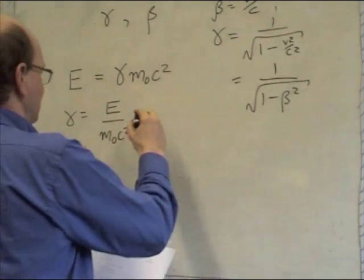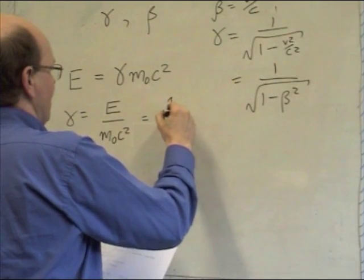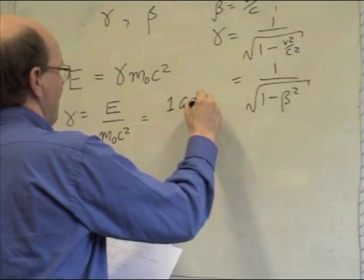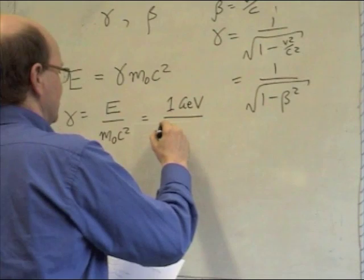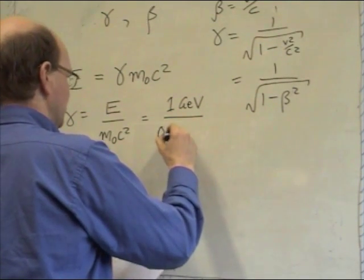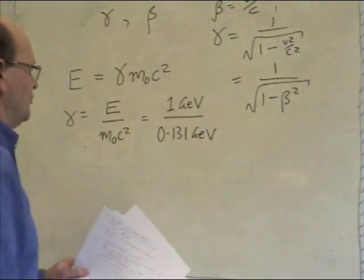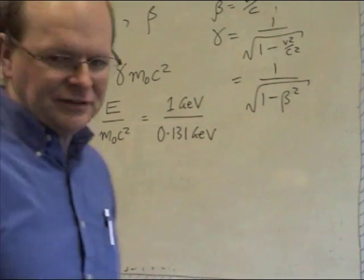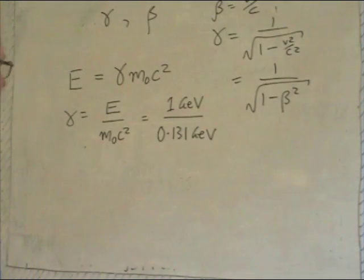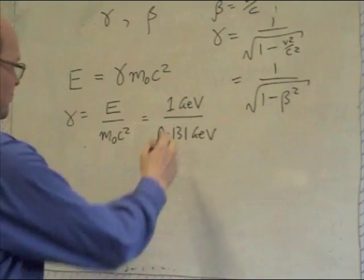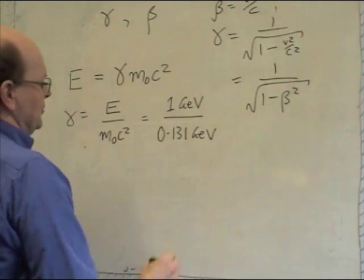And so in this case, the total energy is 1 GeV, and m0 c squared is 0.131 GeV, because m0 is 0.131 GeV over c squared. Again, you just move the c squared up and write m0 c squared in energy units.